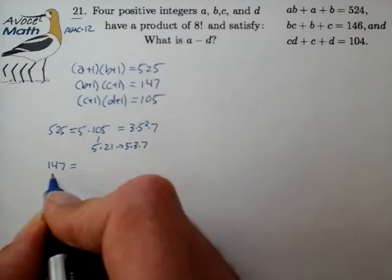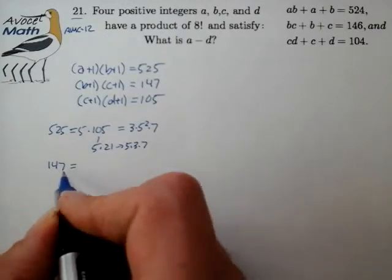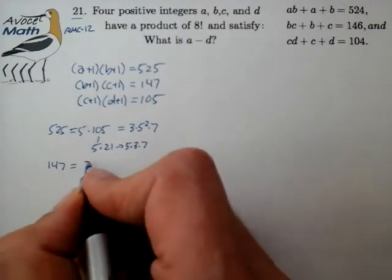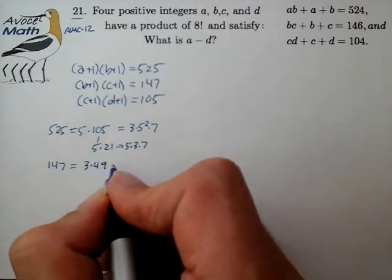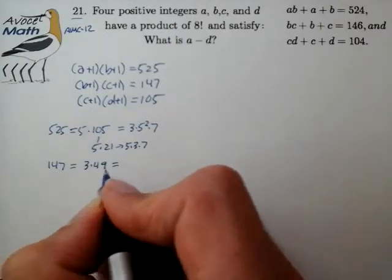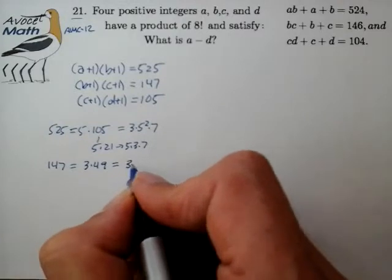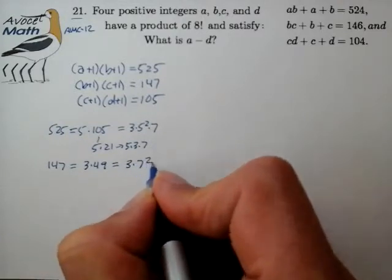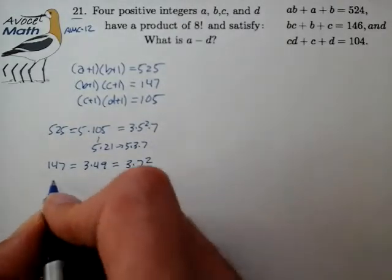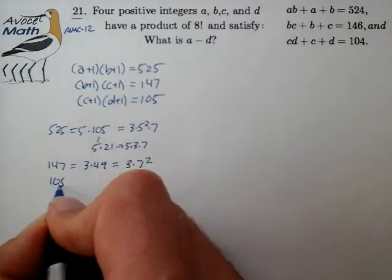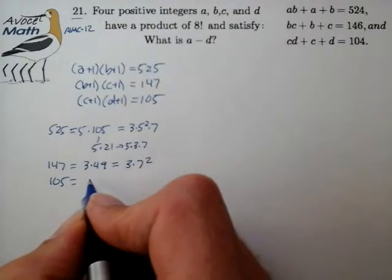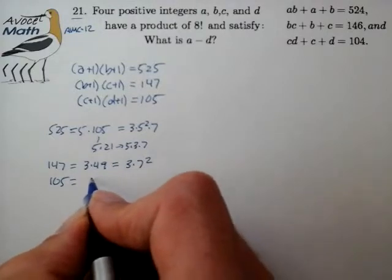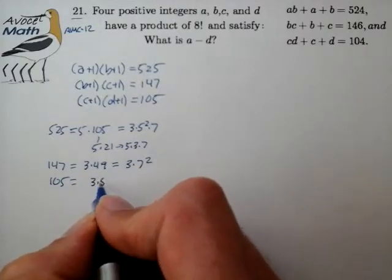147 divides by 3, so let's do that first. Dividing by 3 gives 3 times 49. I recognize 49 as 7 squared. And 105 — from before — that's 3 times 5 times 7.